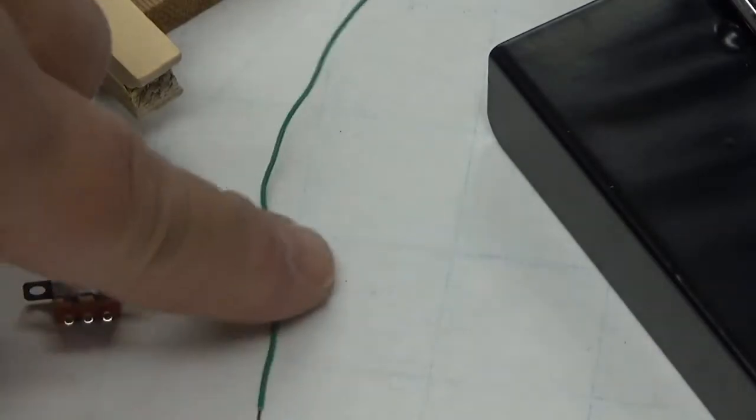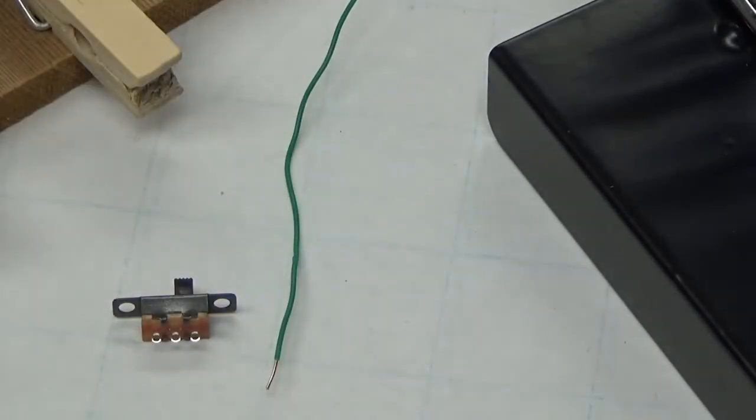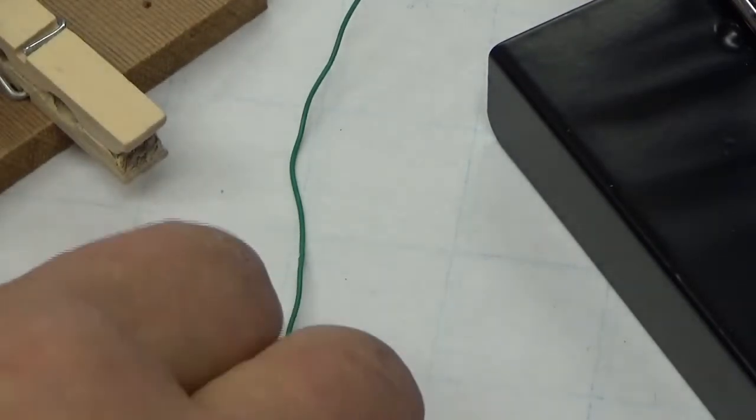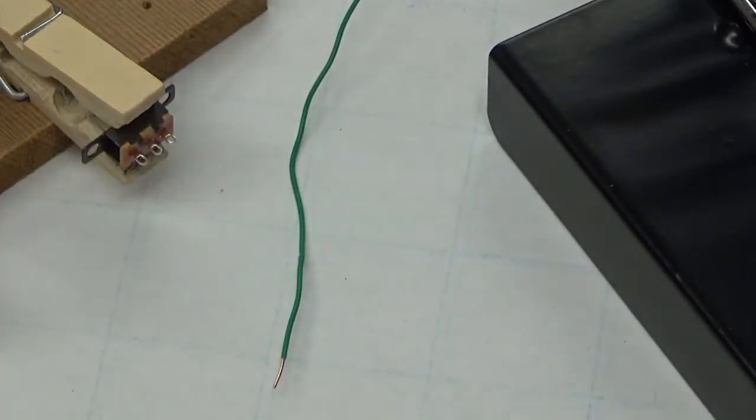So now what you have is your switch and a stripped wire. I'm then going to position my little handy-dandy switch holder made out of a clothespin and a piece of wood. And we're going to clamp it in there so it's held nicely.